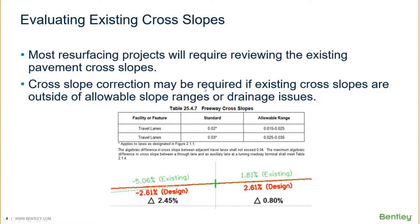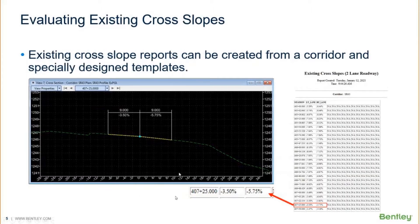What I want to show you in this first example is how we can create a corridor with some specially designed templates to produce an existing cross slope report. We're going to do a simple example — just a two-lane road with a left lane and a right lane — and we're just going to examine the top of the pavement to extract the existing pavement cross slopes using a template and a corridor. It's a very simple process.